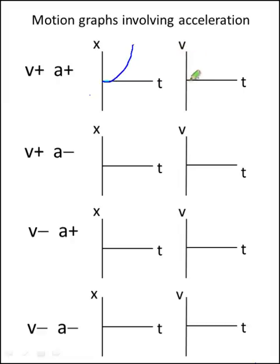The velocity versus time graph is going to be a straight line, showing that the velocity is increasing at a constant rate, so constant positive acceleration.